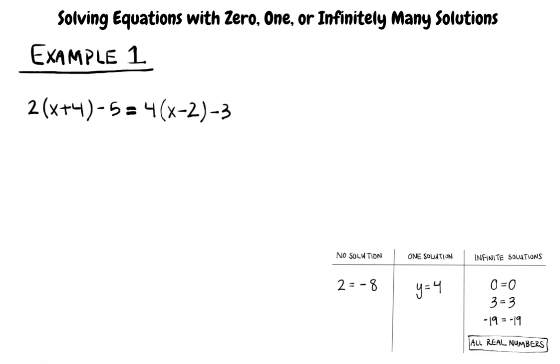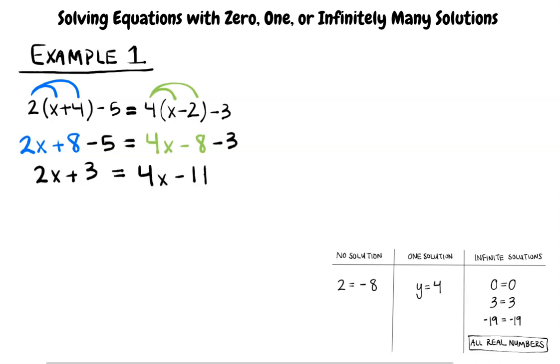To solve this equation, we first distribute. The 2 distributes to the x and the 4, and the 4 distributes to x and the negative 2. Then we combine the like terms and we see that we will have 2x plus 3 equals 4x minus 11.